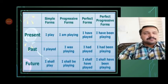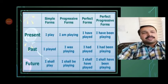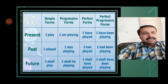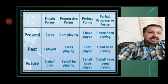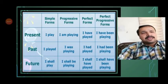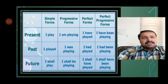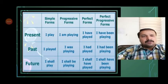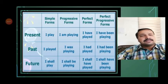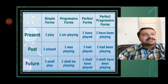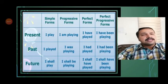In present progressive tense: I am playing, you are playing, we are playing, they are playing. For 'he' or 'she': he is playing, she is playing, Raju is playing. In present perfect tense: I have played, you have played, we have played, they have played. For singular: she has played, he has played, Raju has played.